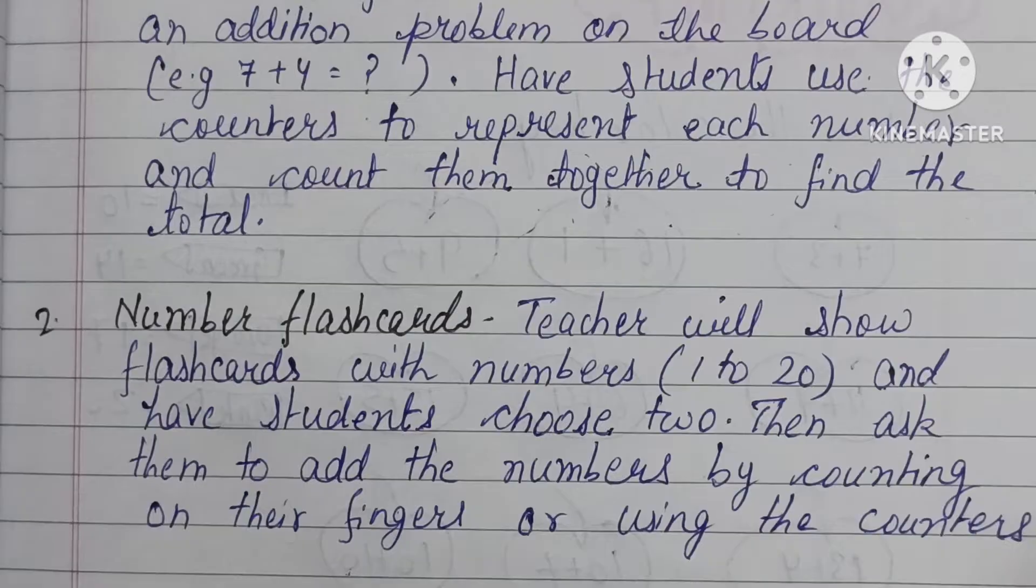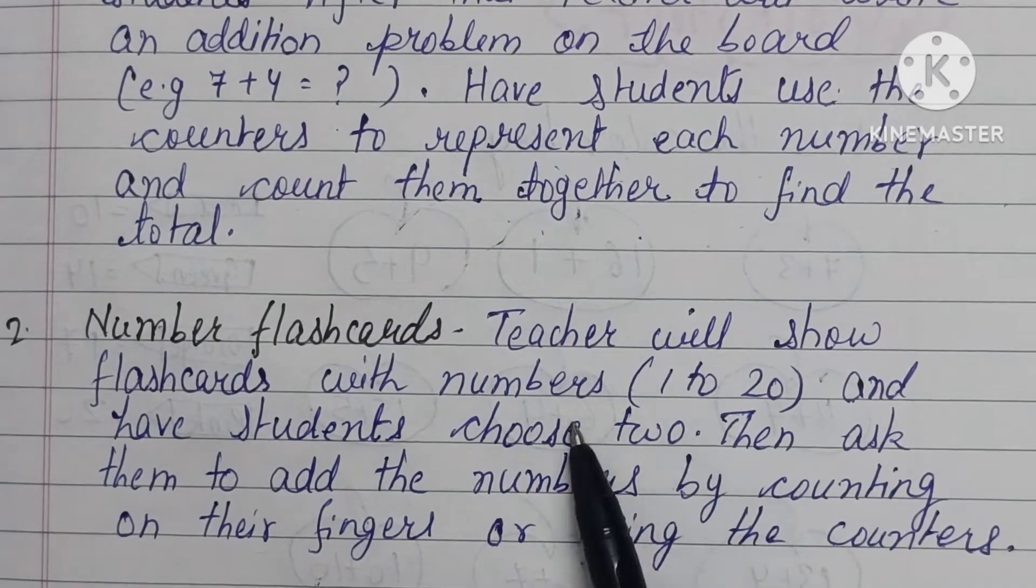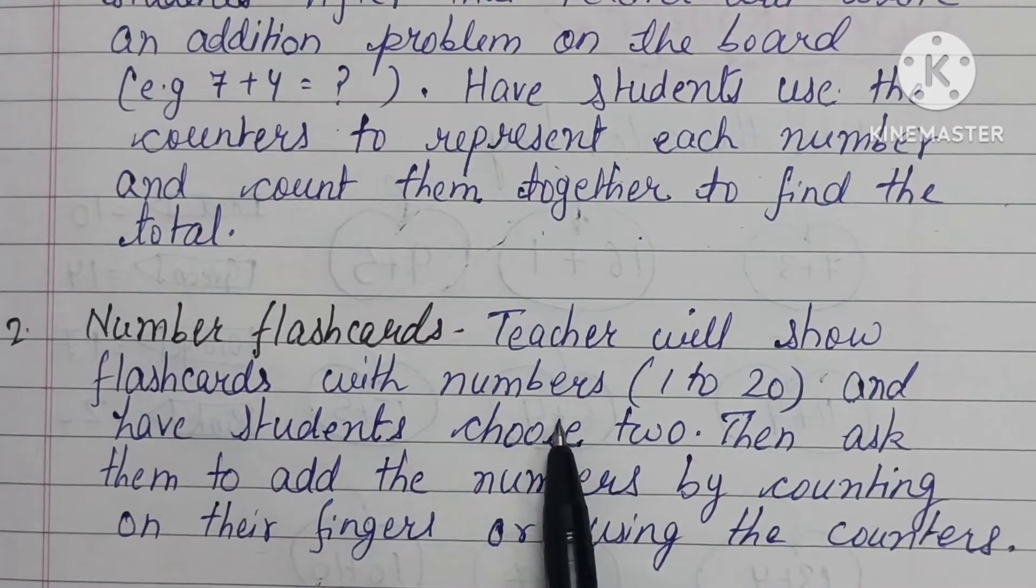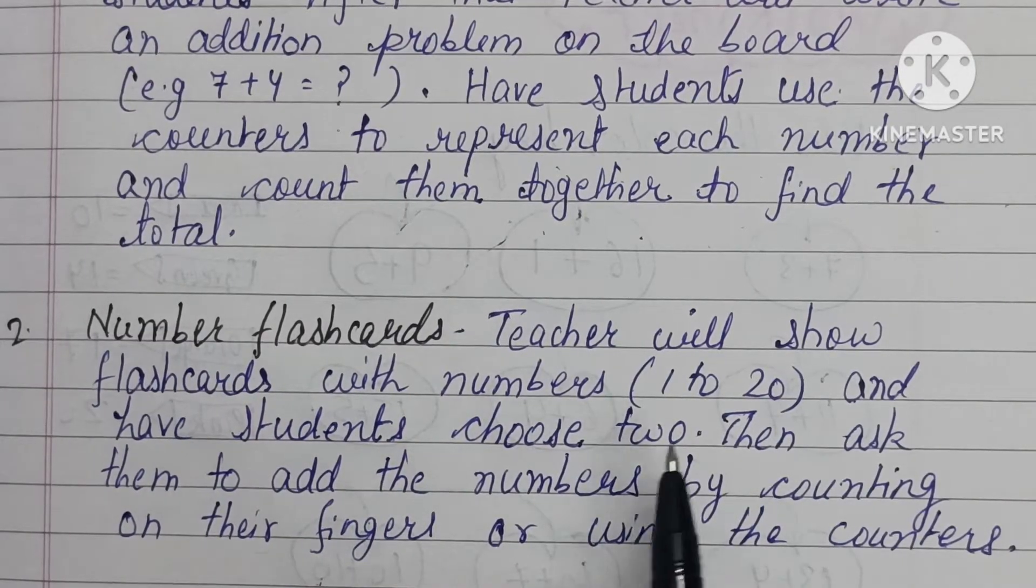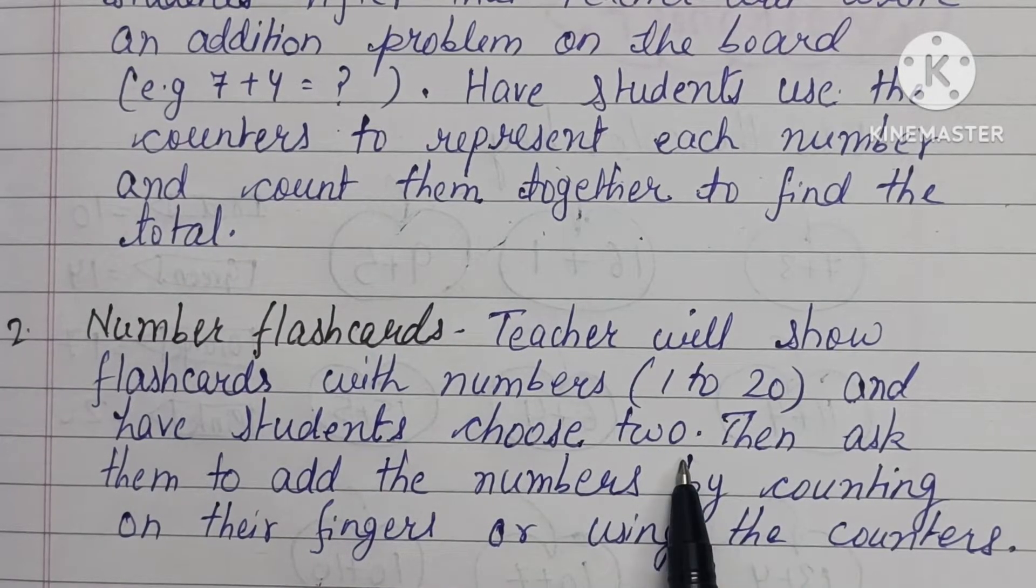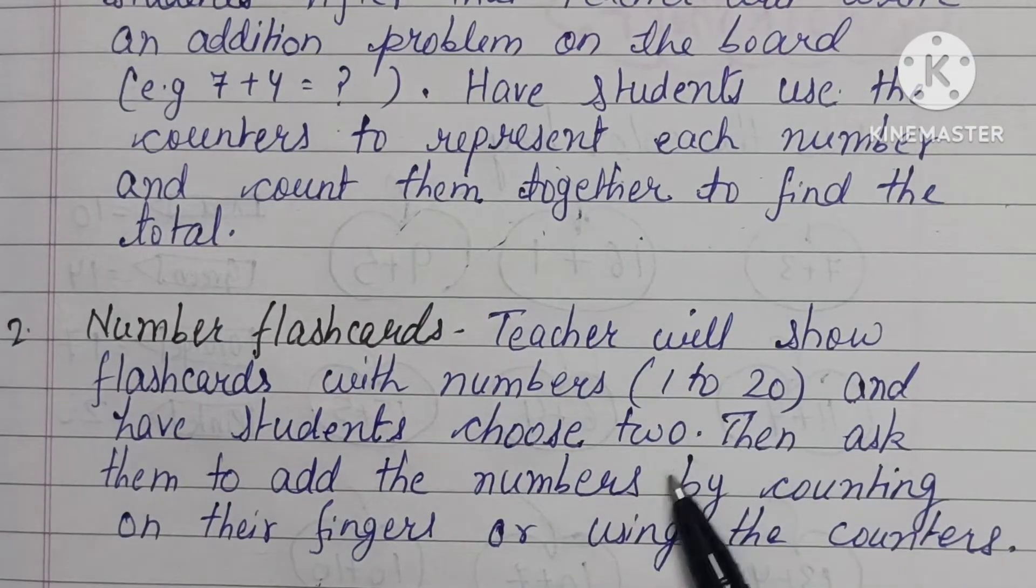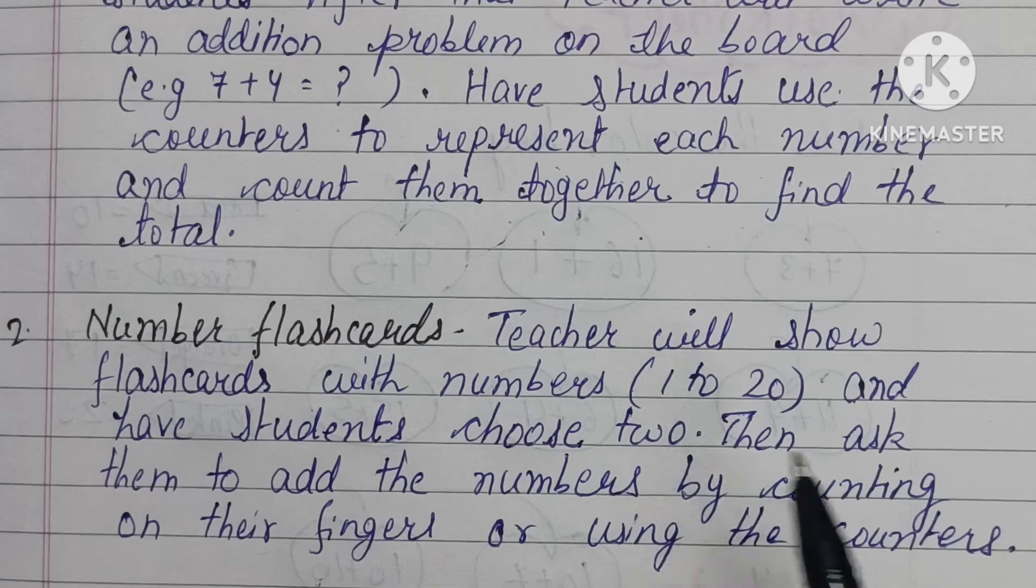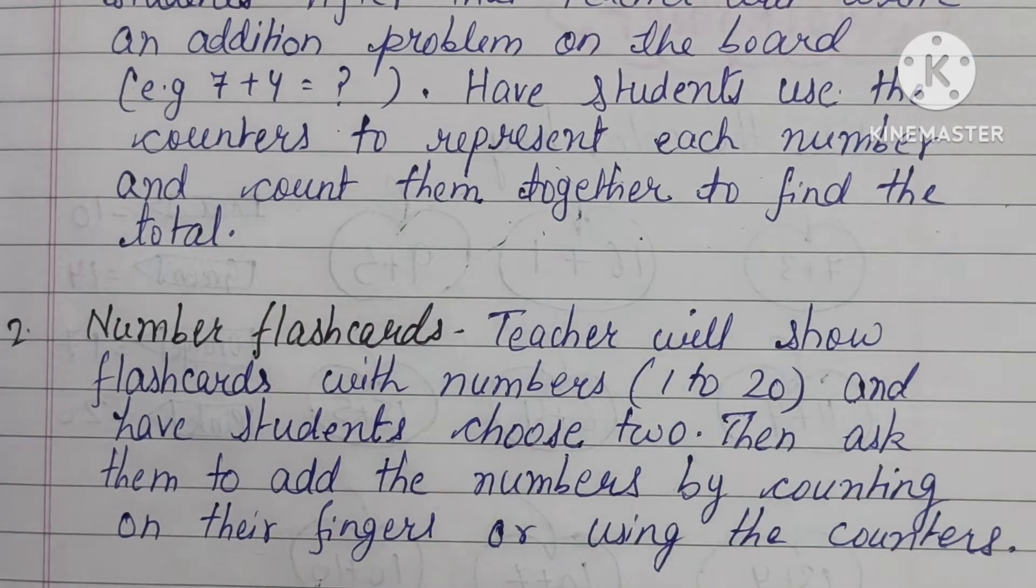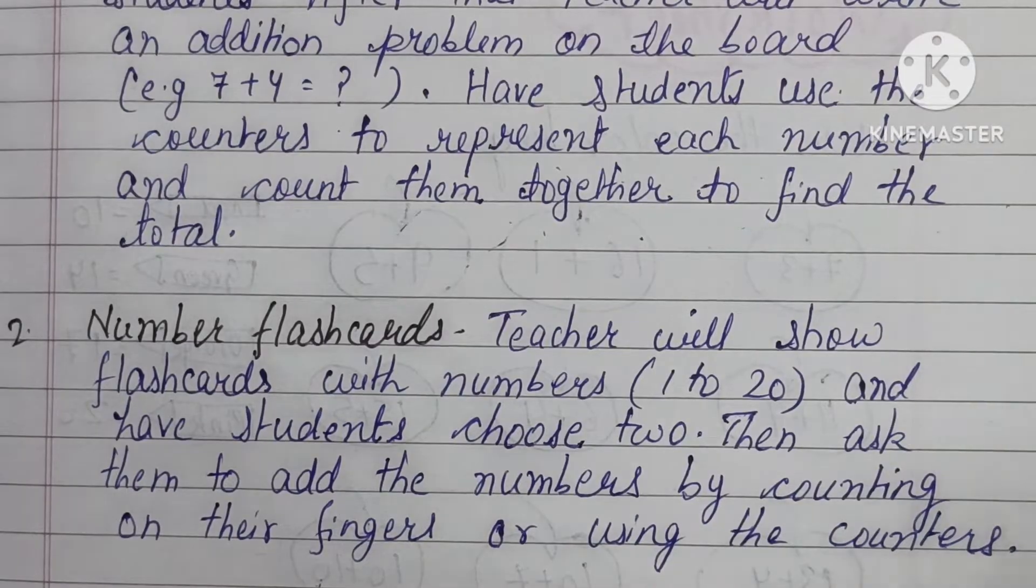Next is number flashcards. Teacher will show flashcards with numbers 1 to 20 and have students choose two. You can call any student and give them flashcards to choose any two, then ask the student to add the numbers by counting on their fingers or using the counters.